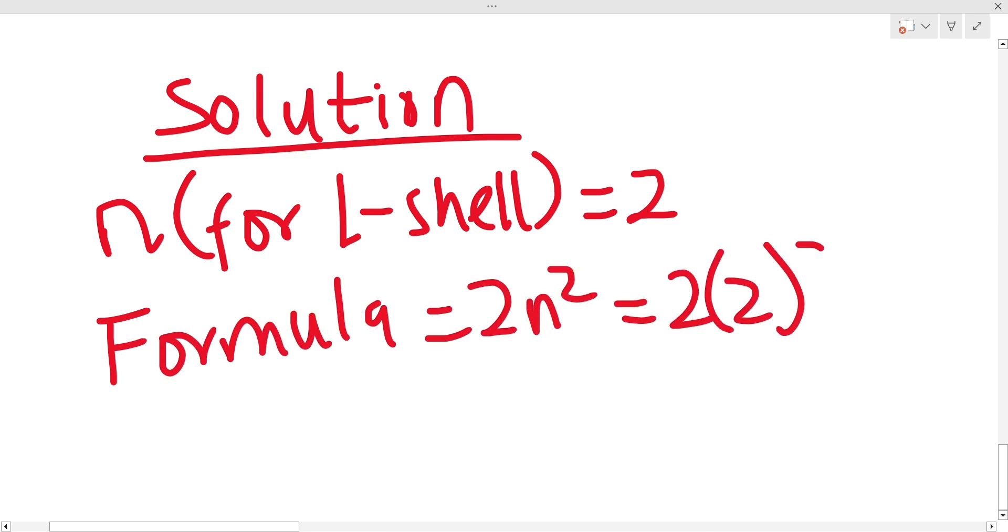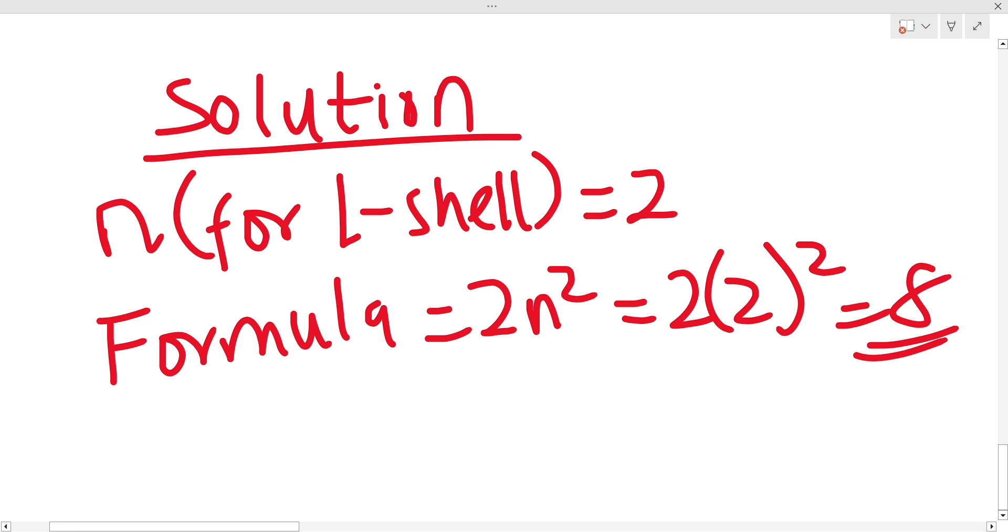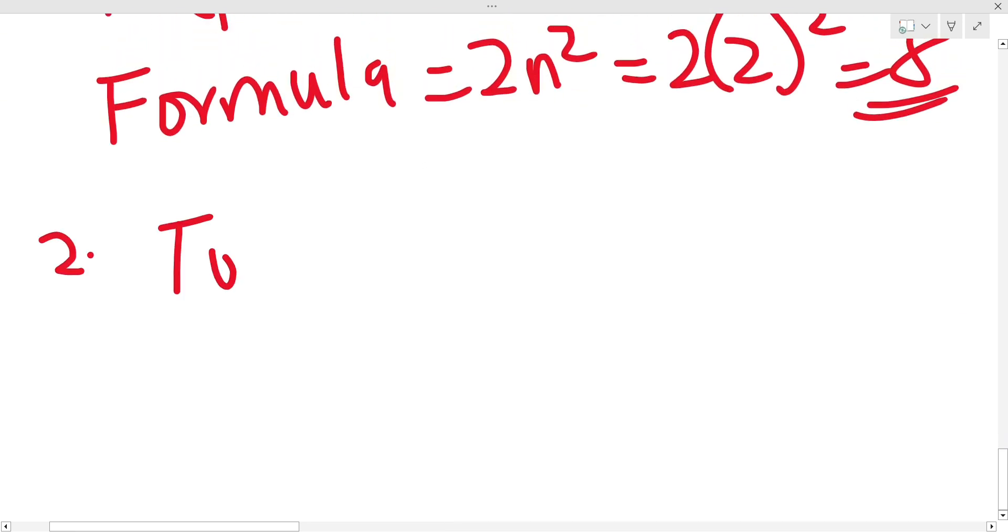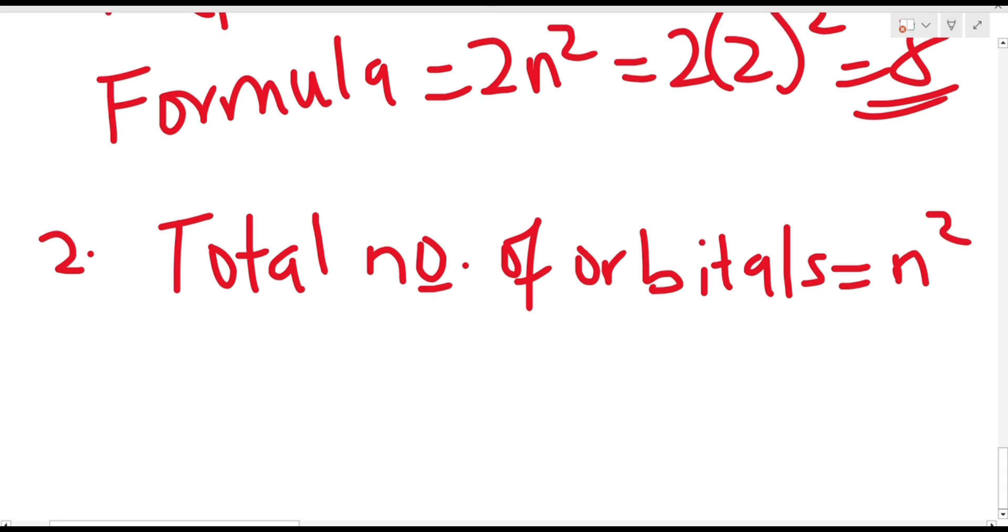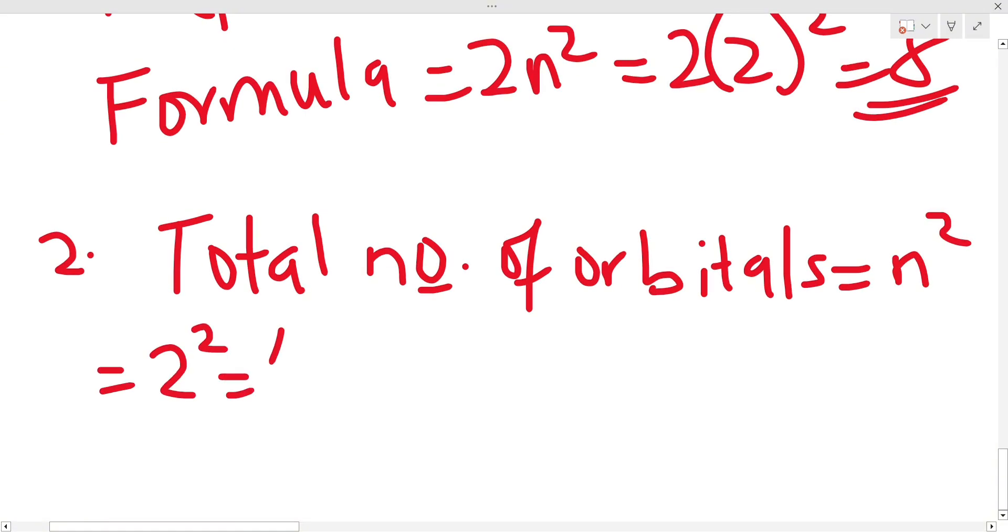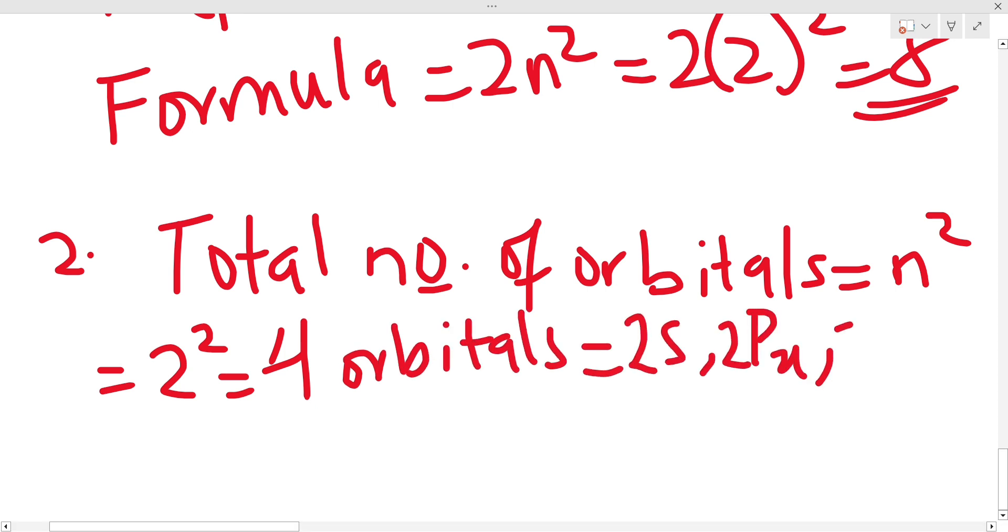Now to calculate the total number of orbitals, we use the formula n² where n is also the principal quantum number which is 2 for L shell. As 2² is equal to 4, that gives us a total number of four orbitals which are the 2s, the 2px, the 2py, and the 2pz orbitals.